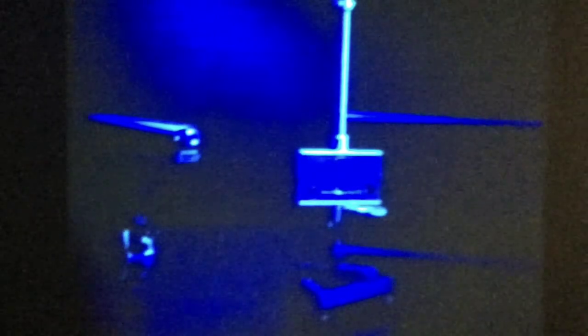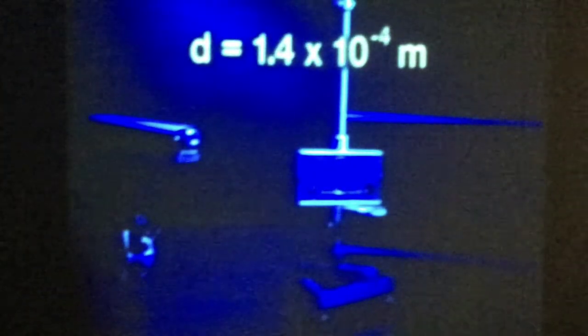Using the geometry of the apparatus, it can be shown that the distance traveled by the sphere in 60 seconds is 1.4 times 10 to the minus 4 meters. By substituting the time and distance into the kinematic equation for accelerated motion,